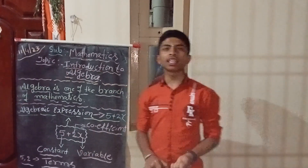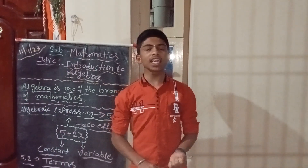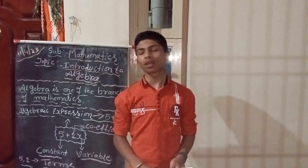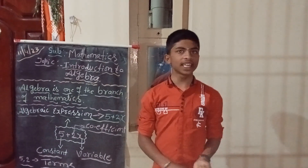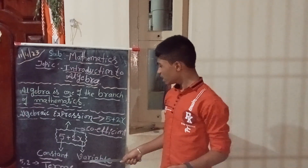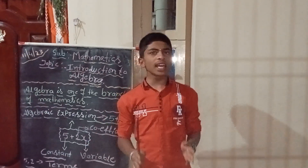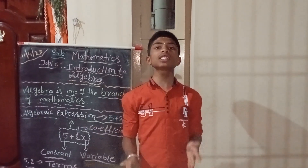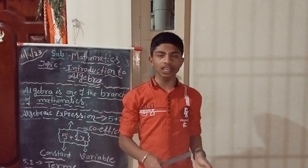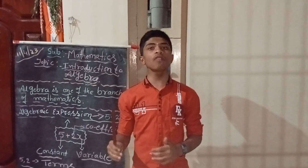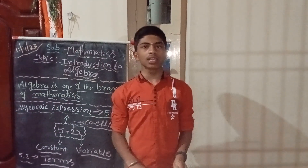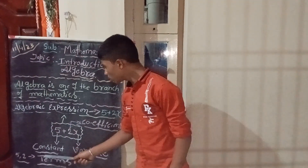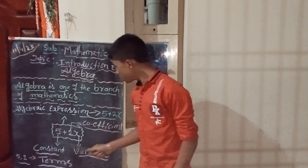Next, coefficient. A coefficient is a numerical factor of a term. It is called coefficient. And variable — a variable is a quantity whose value is not fixed.